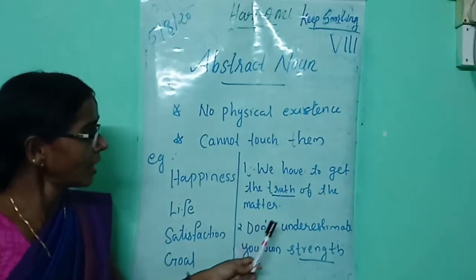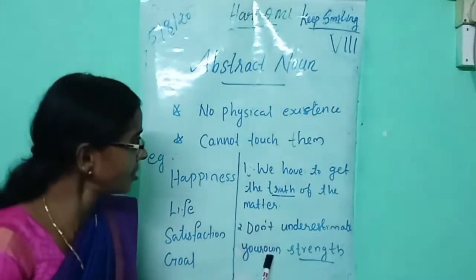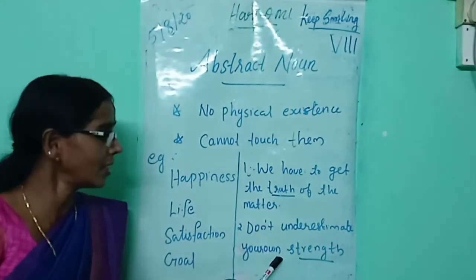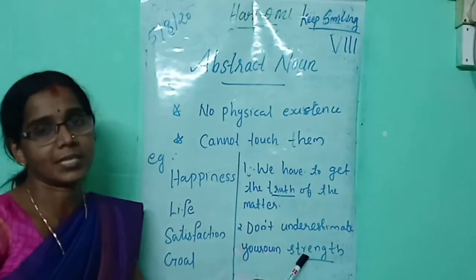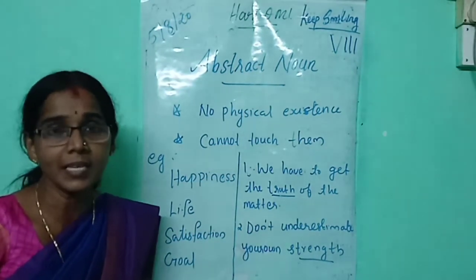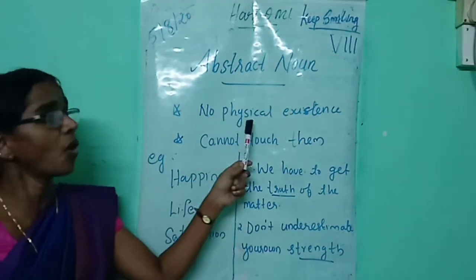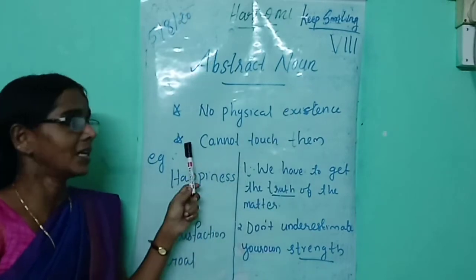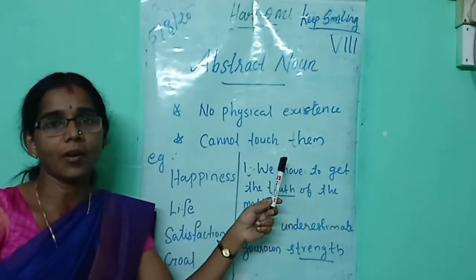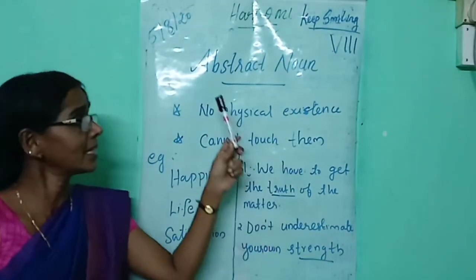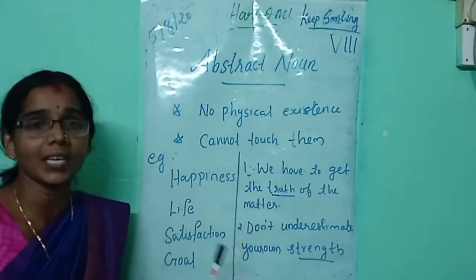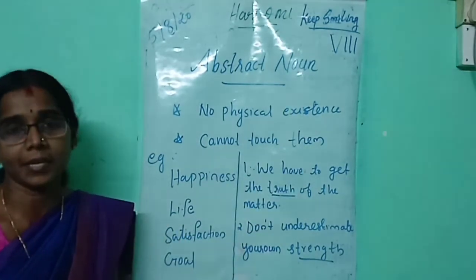Next one: 'Don't underestimate your own strength.' Which is the abstract noun? Strength. Abstract nouns have no physical existence and we cannot touch them. Okay, do all of you understand?